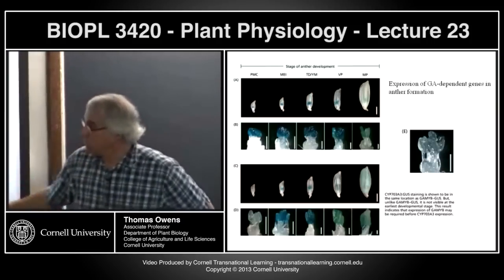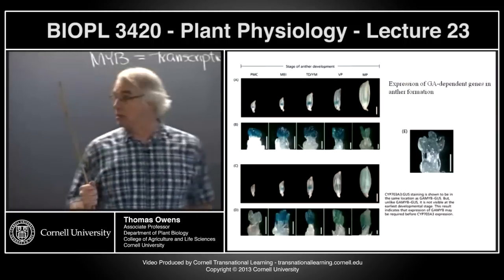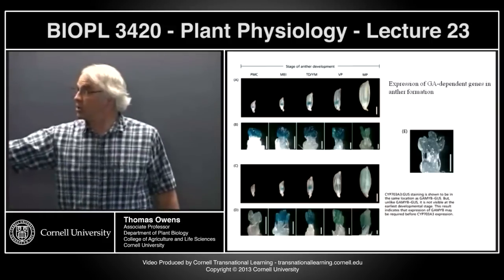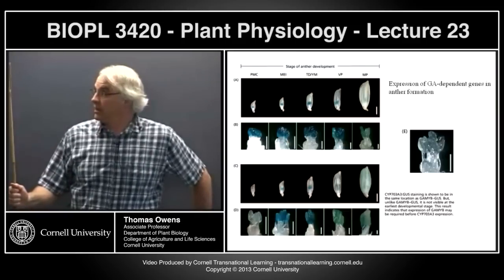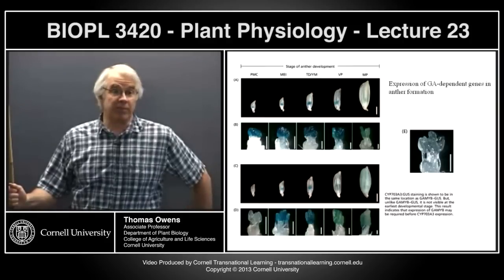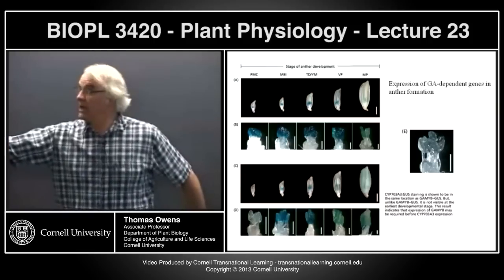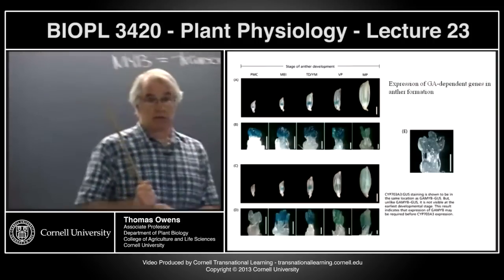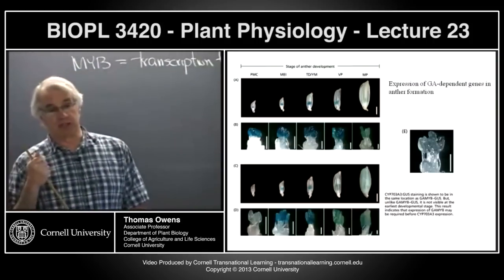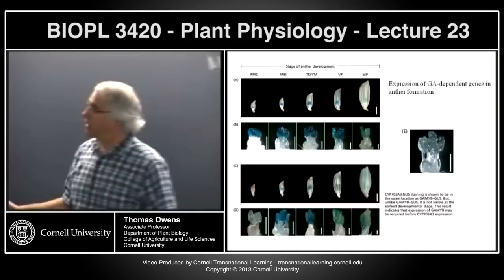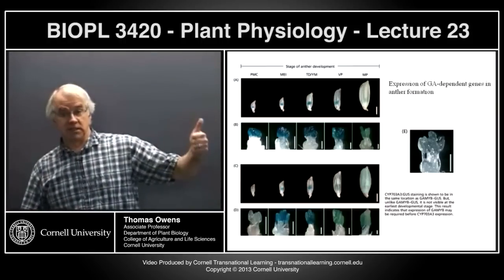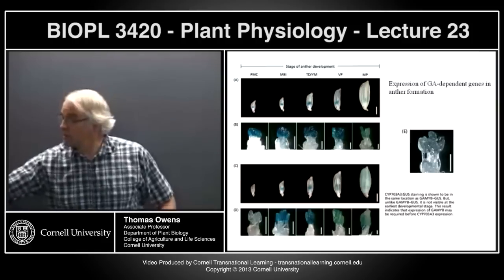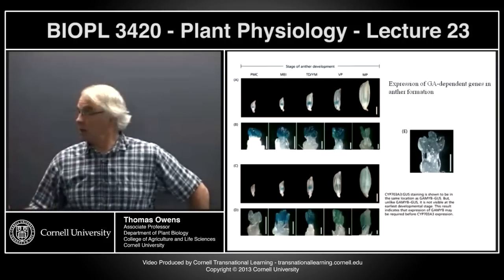The next panel shows the response of a gene involved in pollen development — expected to be a late gene turned on by the GA-MYB. And we can see exactly that: the GUS expression appears later in anther development than the transcription factor that controls it. In a mutant where the GA-MYB transcription factor has mutations, there is no GUS expression, suggesting GA-MYB is the key factor controlling GA-dependent transcription.